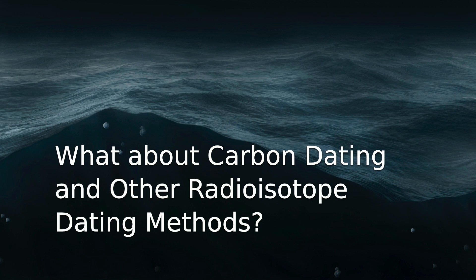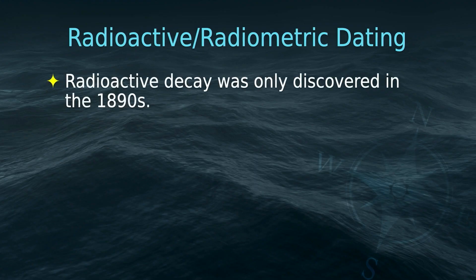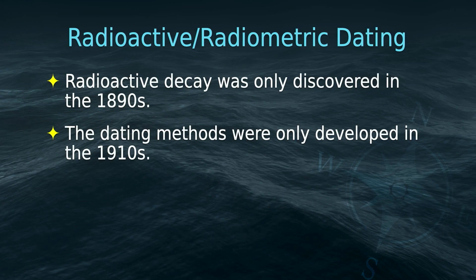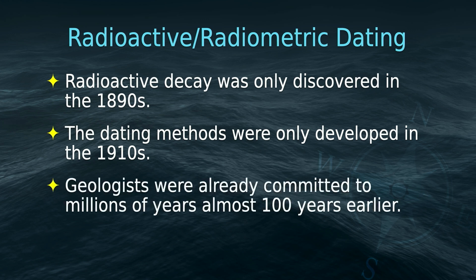Now let's look at the dating methods: carbon dating and the other radioisotope dating methods. Radioactive decay was only discovered in the 1890s — that's when scientists found that some elements were unstable and decayed into other elements. It took a few more years to develop dating methods using those radioactive isotopes, and those were developed in the 1910s. So geologists were already committed to millions of years almost a hundred years before radiometric dating methods were invented.